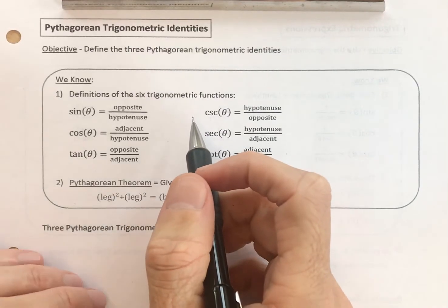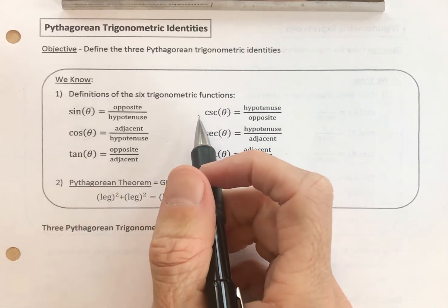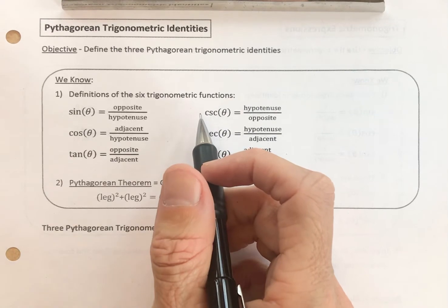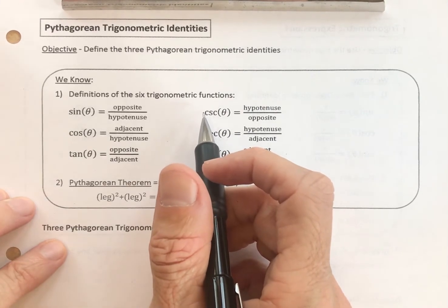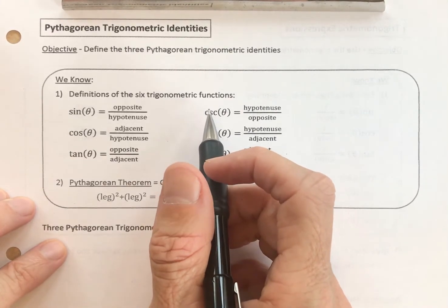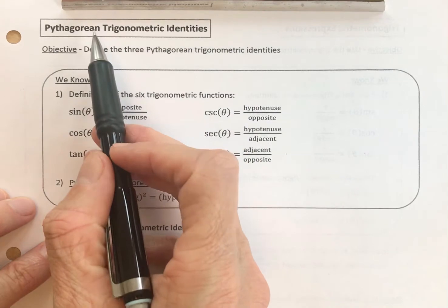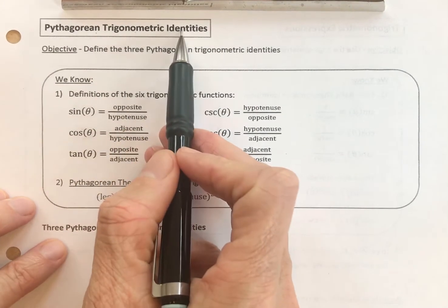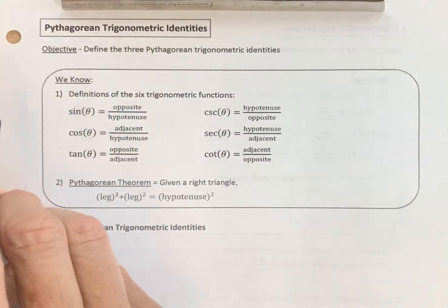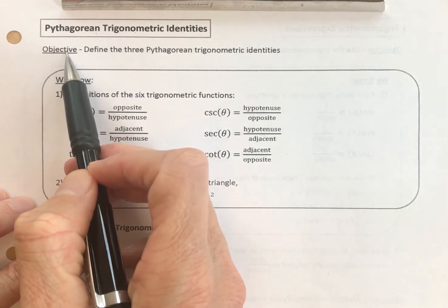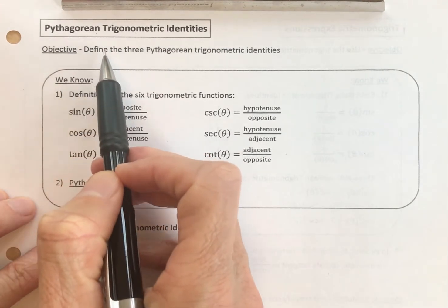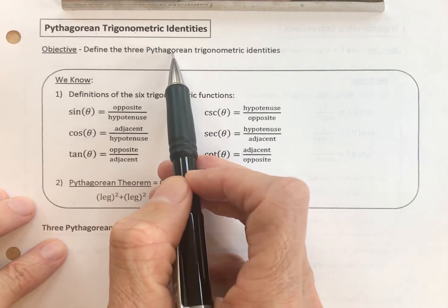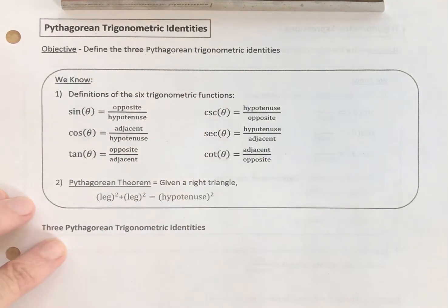In our previous video lecture, we talked about the eight basic trigonometric identities. In this video lecture, we're going to talk about the Pythagorean trigonometric identities, of which there are three. Our objective is to define those three Pythagorean trigonometric identities.